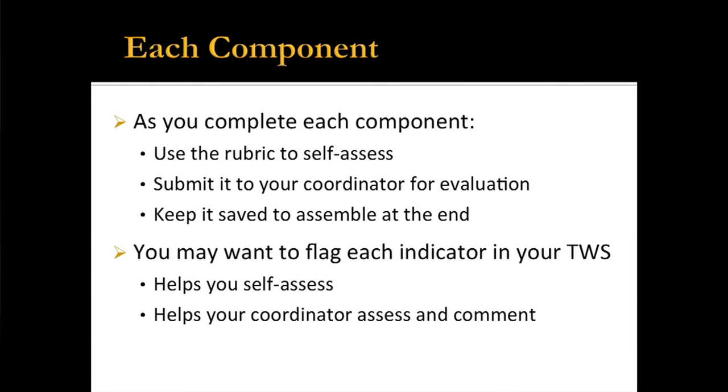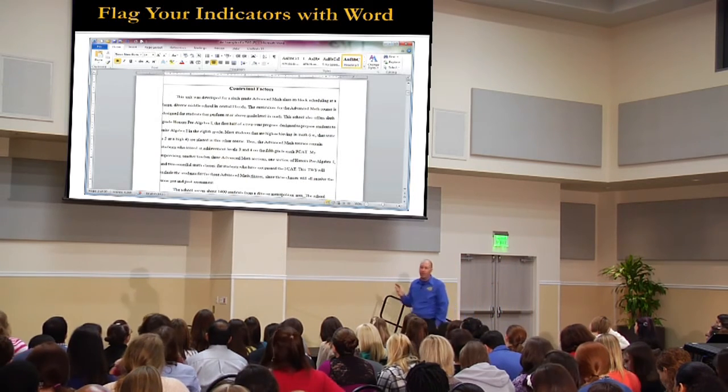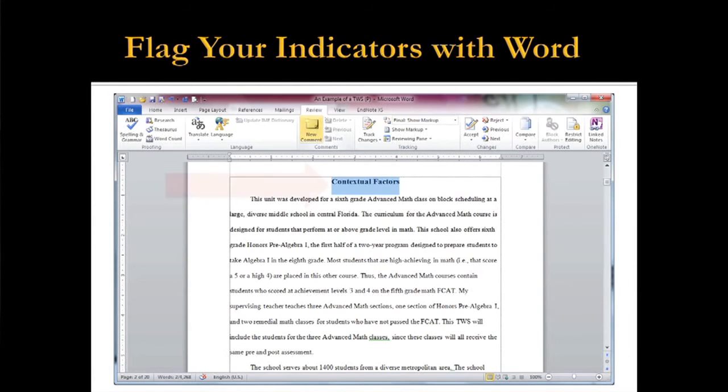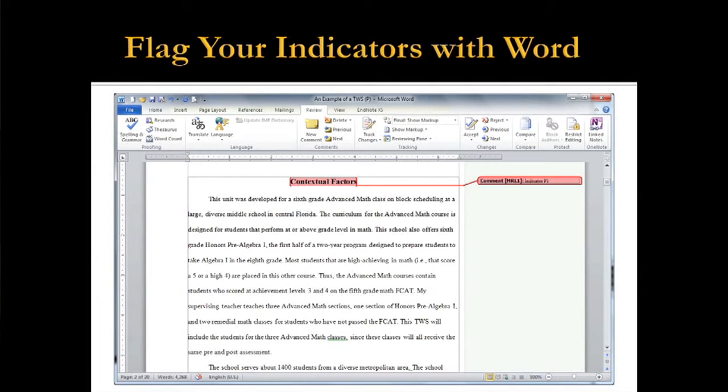You might want to flag each indicator in your TWS to say, this is where I demonstrated indicator P2. You can do that in Microsoft Word pretty easily — click on the Review tab, highlight the text, then click on New Comment. So you can highlight the spot where you did what P2 tells you to do and label it. Then your coordinator can go back, look at that, and say, I know what you were going for here, but you need to add this information or phrase it differently. If you flag it, it's a lot easier for them to zero in on.